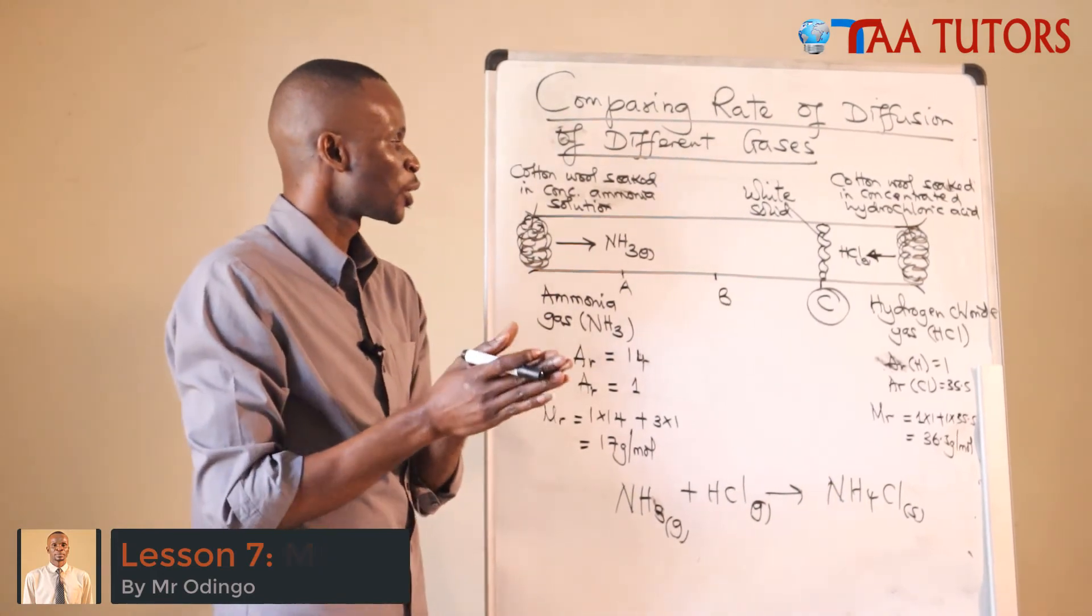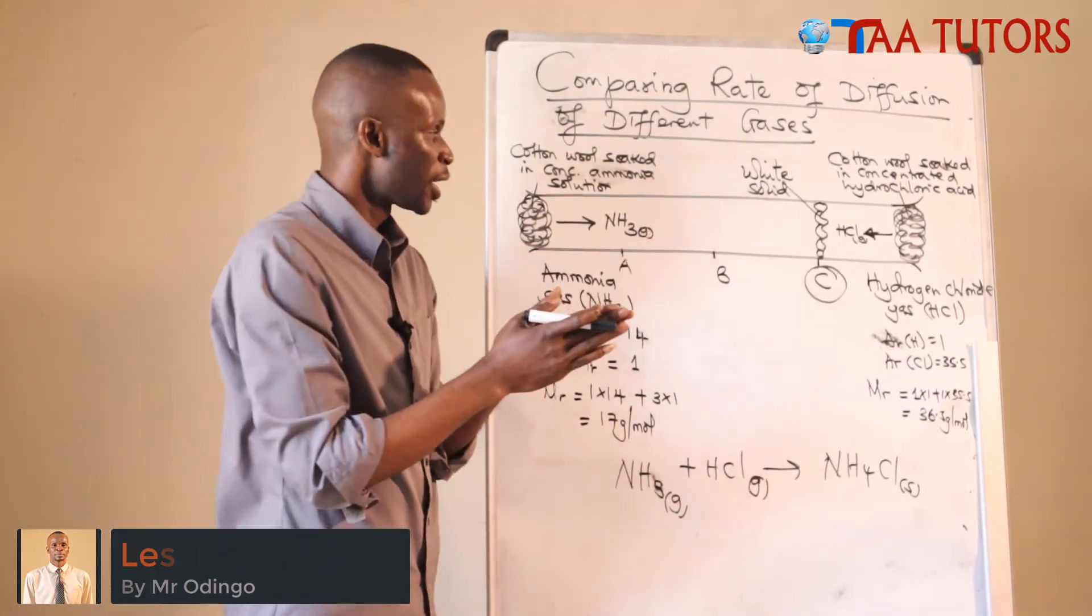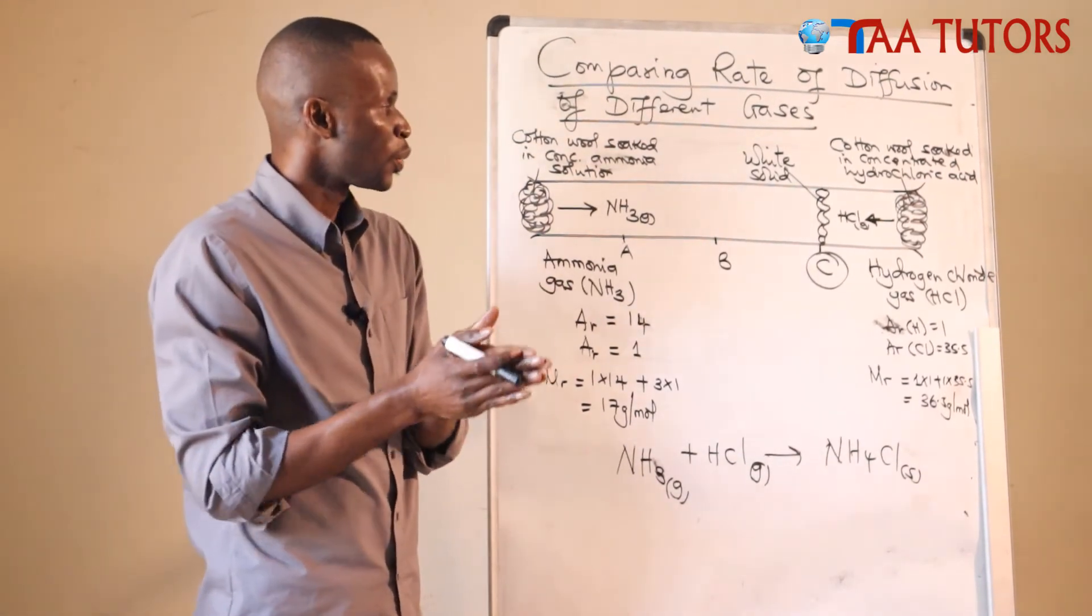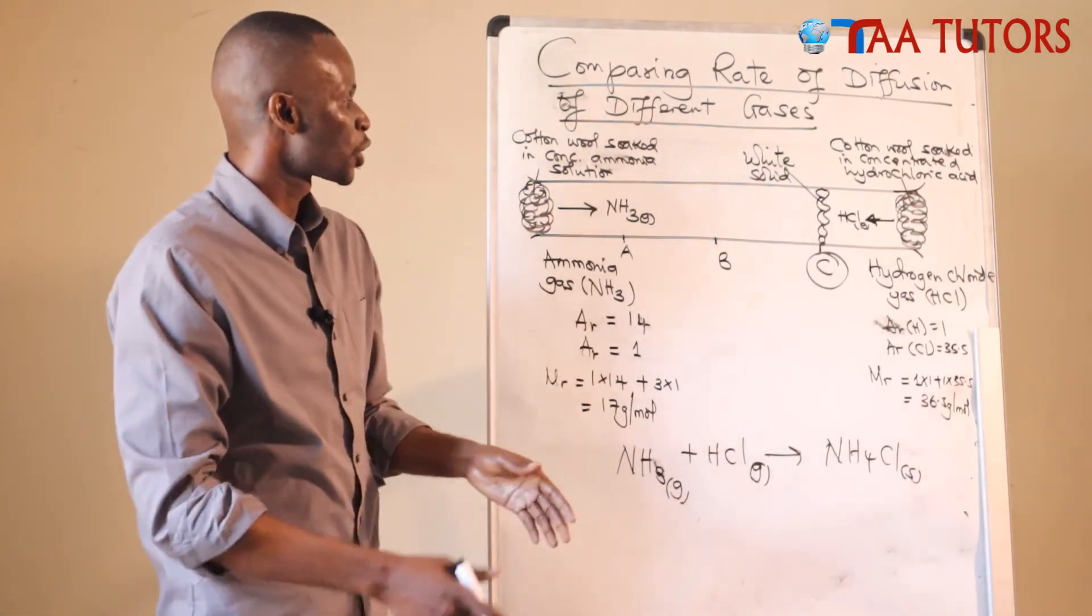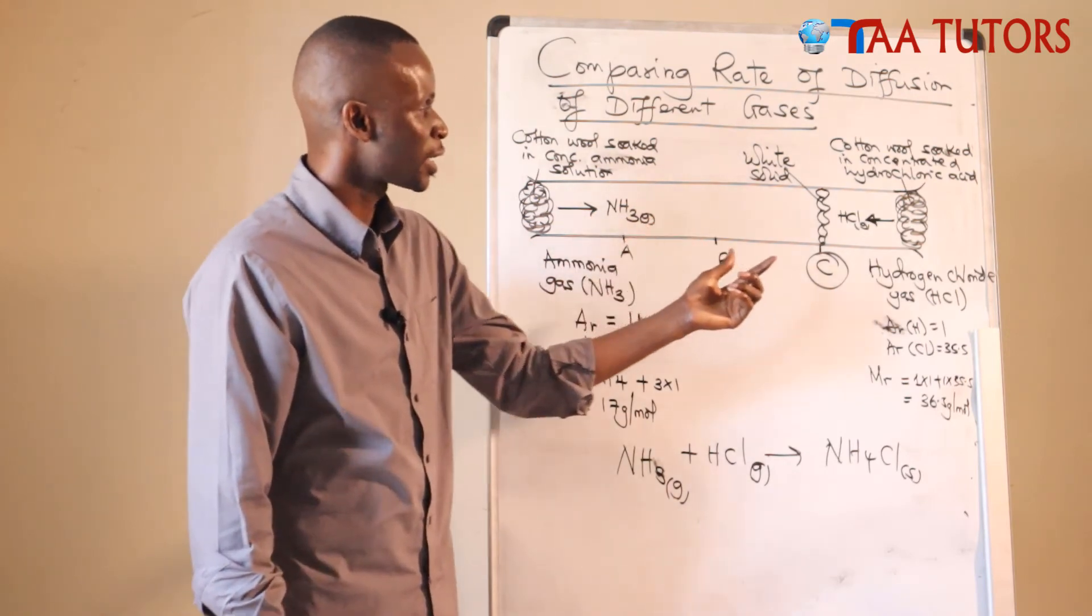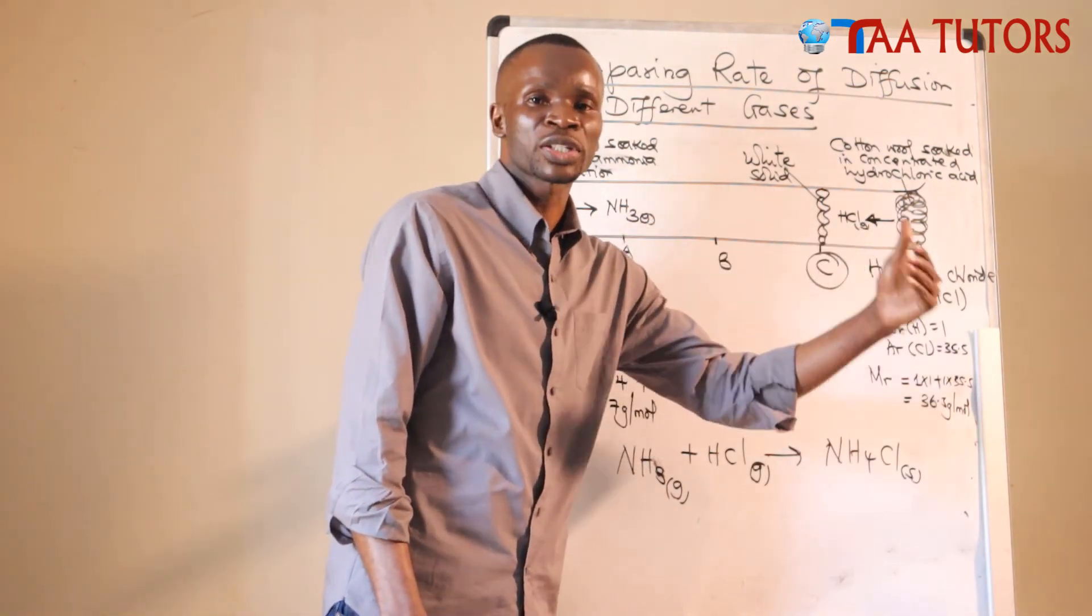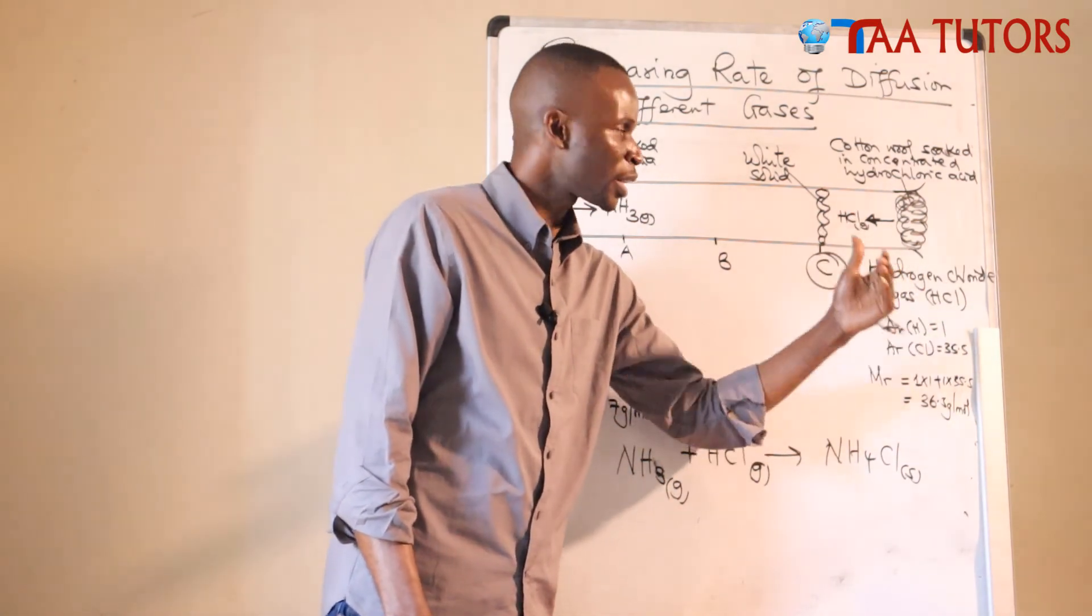And that is very important for you to understand as a student. So if you are asked, we have explained, we are saying it will meet at C. Then how do we explain? Why do they meet at C? Not A, not B. We say they met at C because ammonia gas is lighter than hydrogen chloride gas, and so will diffuse faster than hydrogen chloride gas.